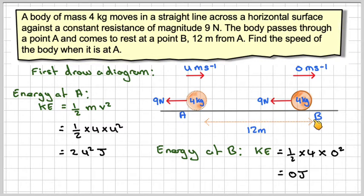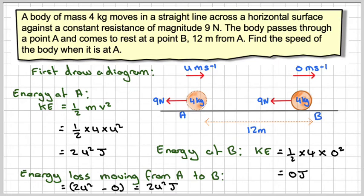Going from here to here, there's going to be an energy loss. So this energy loss, moving from A to B, is going to be 2u squared minus 0, which gives me 2u squared joules.